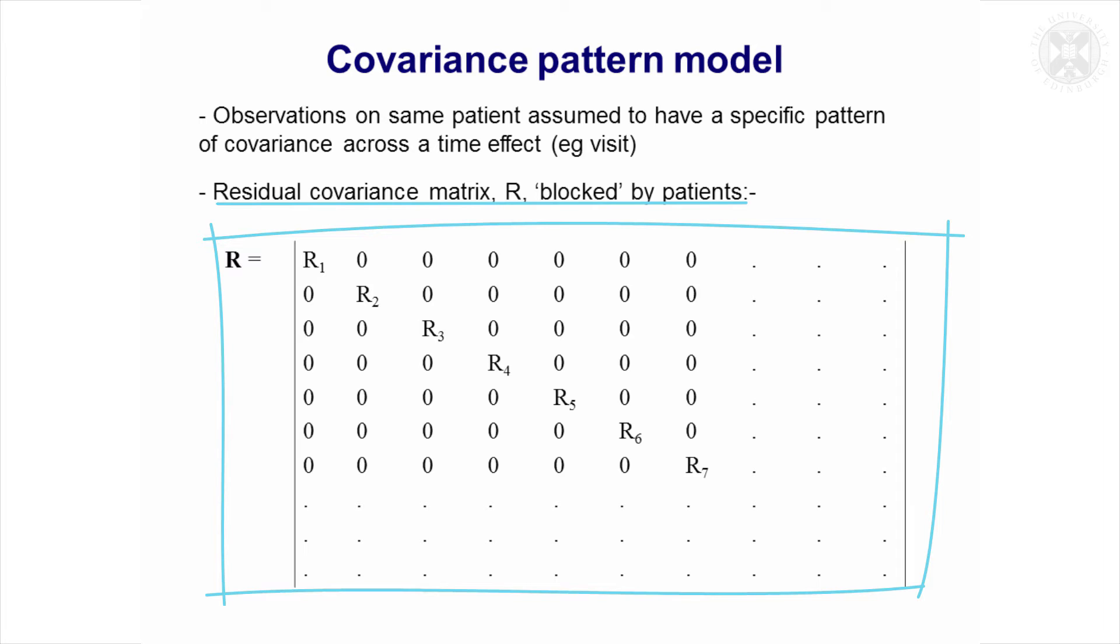In this model we're going to assume that they're uncorrelated. It's the structure of these correlations on the same patient over repeated measurements over time that we're interested in setting a pattern for.